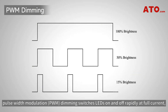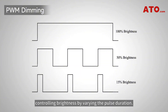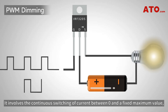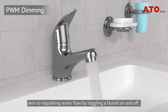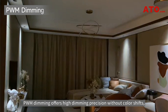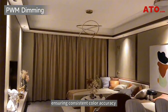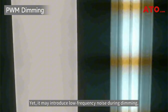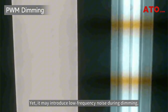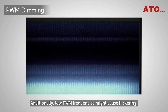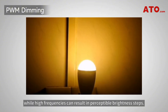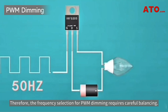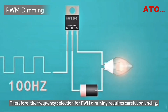In contrast, pulse-width modulation dimming switches LEDs on and off rapidly at full current, controlling brightness by varying the pulse duration. It involves the continuous switching of current between 0 and a fixed maximum value, akin to regulating water flow by toggling a faucet on and off. PWM dimming offers high dimming precision without color shifts, ensuring consistent color accuracy and preserving LED lifespan as the current remains stable. Yet, it may introduce low-frequency noise during dimming. Additionally, low PWM frequencies might cause flickering, while high frequencies can result in perceptible brightness steps. Therefore, the frequency selection for PWM dimming requires careful balancing.